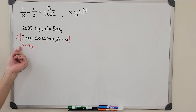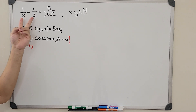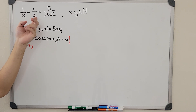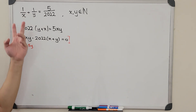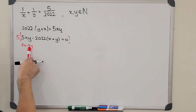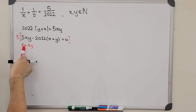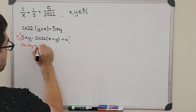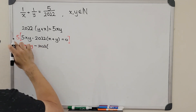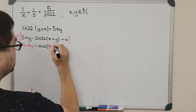The reason we split the coefficients evenly is because x and y play the same role — once we get a value for x and y, we can get another answer pair by swapping them. So we want 5 attached to x and 5 attached to y symmetrically. For the middle term, we distribute the 5 into x plus y to get minus 2022 times 5x plus 5y.